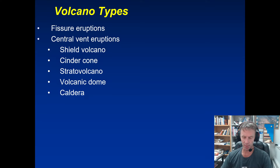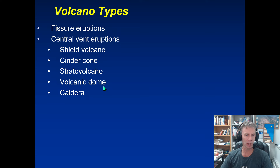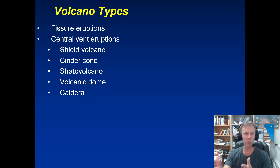We're going to look at different types of eruptions. Mainly we'll be seeing most of these come out of one centralized vent, one conduit, and we'll see a whole series of volcanoes associated with that: shields, cinder cones, stratovolcanoes, volcanic domes, and calderas. We'll also look at what happens when volcanoes erupt along a linear fissure — some elongated vent that might stretch for miles or kilometers rather than one centralized location.